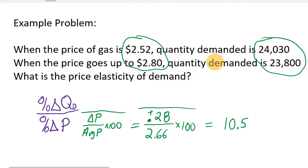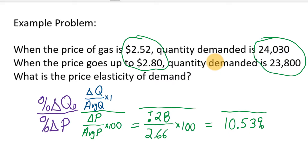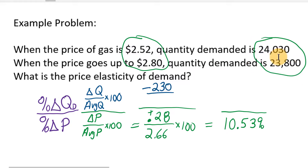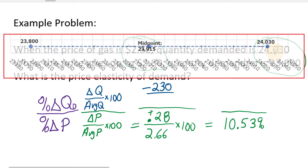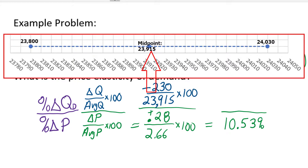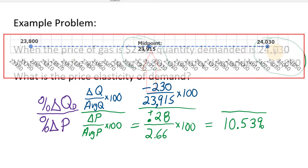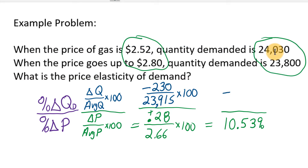The purpose of the elasticity is to see how large an effect that price change has on the amount of gas people are buying. We calculate the change in quantity divided by the average quantity times 100. Looking at these two quantities, the change is going down 230 — so minus 230. The average of the two quantities is 23,915. Multiplying by 100 gives a percentage change of just under negative one percent — approximately minus 0.96 percent.